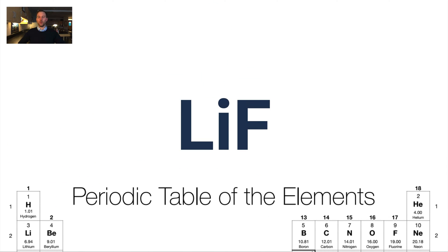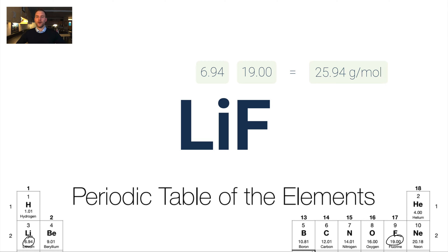Let's do an example. I have LiF — lithium fluoride — which has one lithium ion and one fluoride ion. Going to the periodic table, lithium is 6.94 and fluorine is 19. So 6.94 plus 19 gives us 25.94 grams per mole. This means that one mole of LiF — 6.02 × 10²³ particles — has a mass of 25.94 grams.